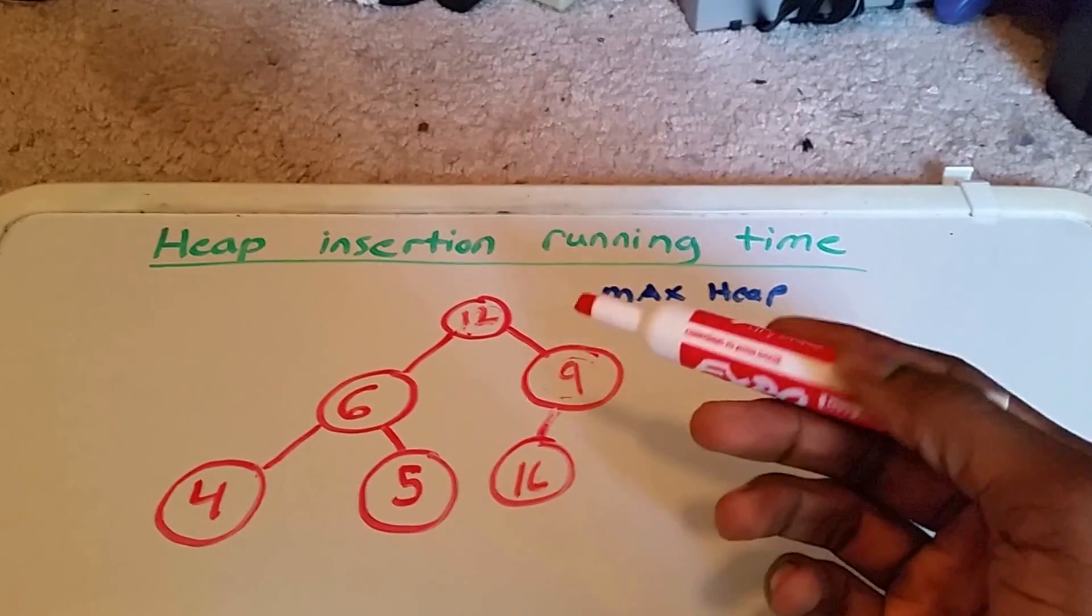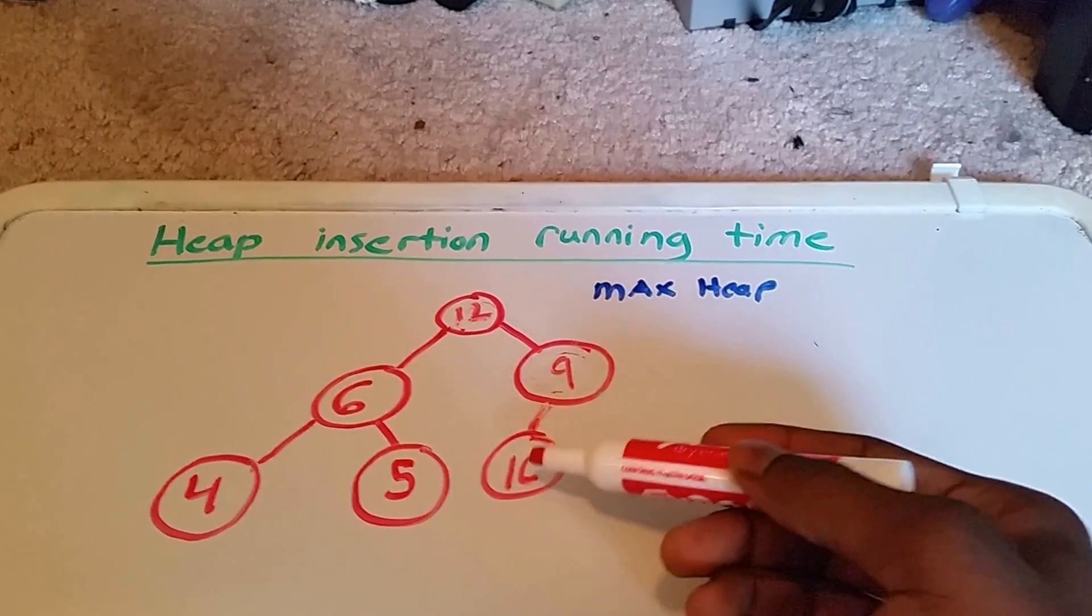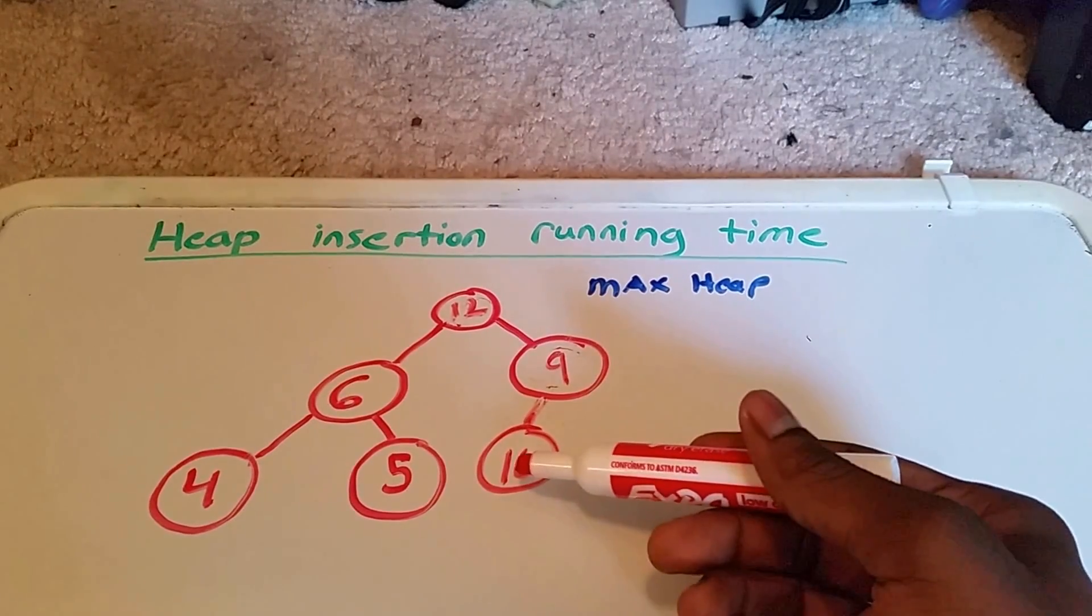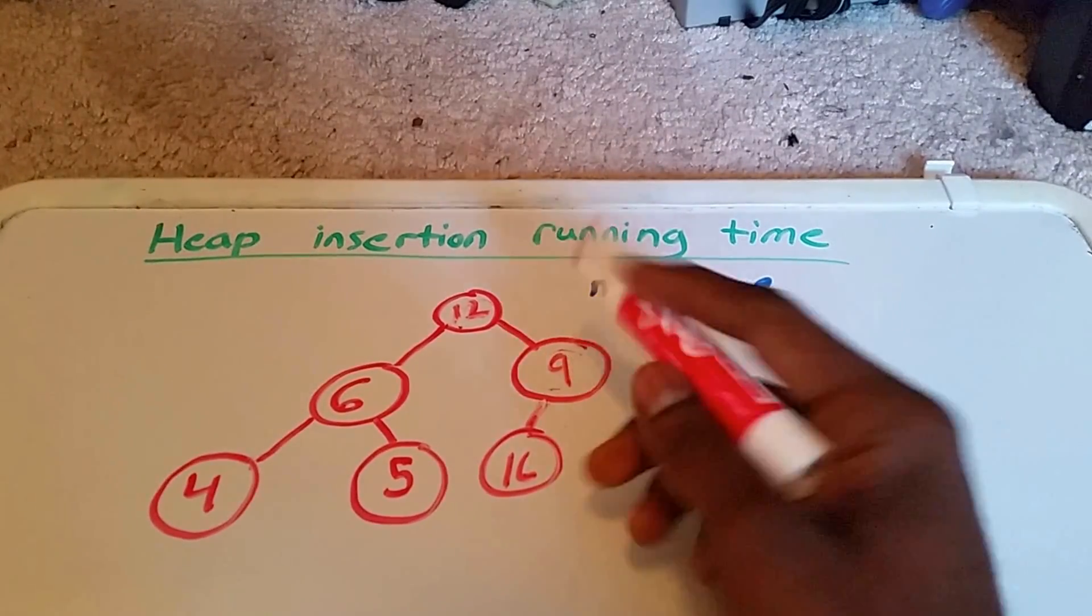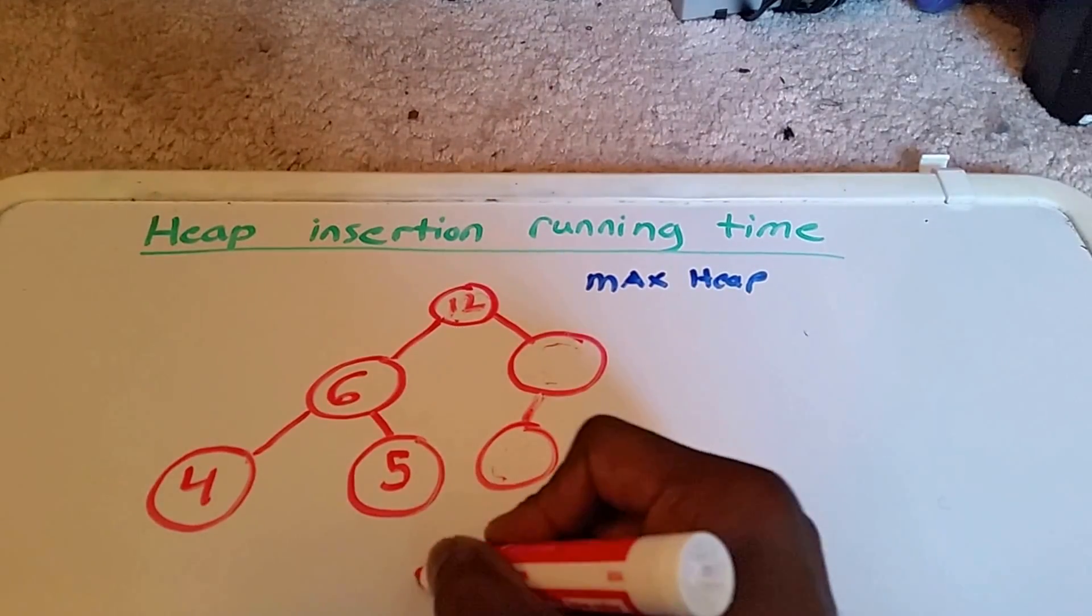And now the maximum number of operations for this element 16 will be swapping it with the 9, which is 1. So I'm going to put 1 here. That's 1.